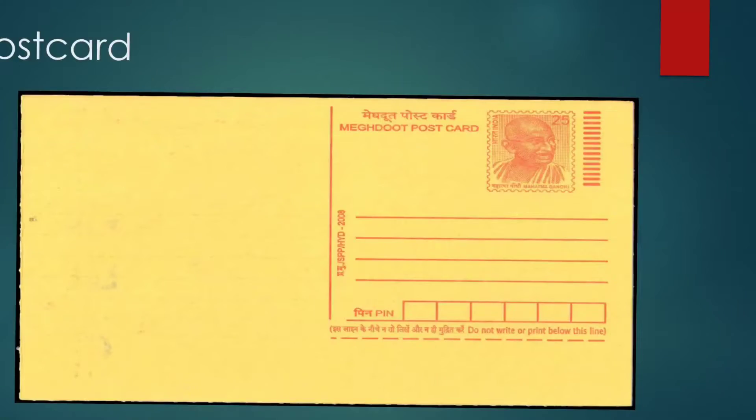Now we have different types of letters. Number one is the postcard. The postcard is the cheapest means of postal service communication. Here is a picture of a postcard — it is a yellow color card. On the right side you will see some lines drawn; there you write the receiver's address. Below that you write the PIN code. The PIN code is a special number assigned to every post office, used by all post offices to deliver letters. You can get a postcard from the post office.